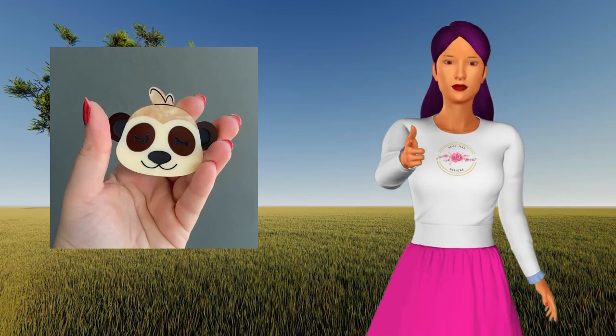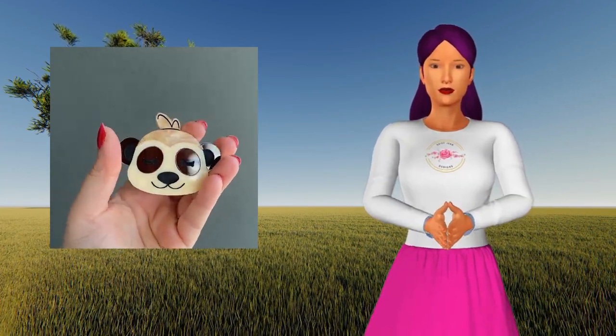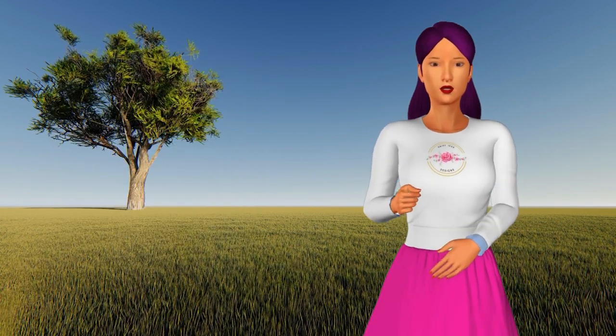Meerkats are part of the mongoose family and are hence immune to the venom of many snakes, as well as the venom of the scorpions they love to eat.